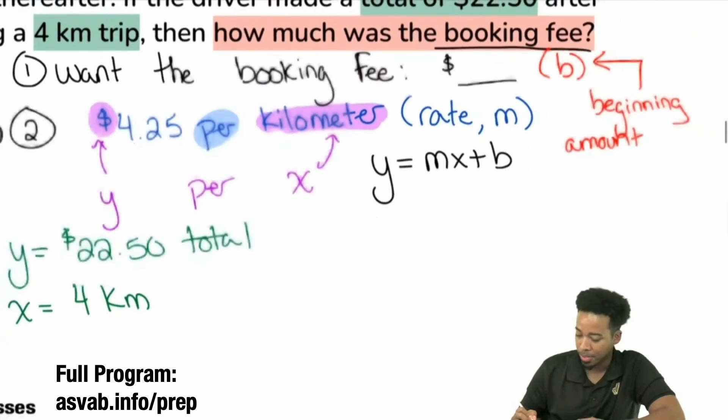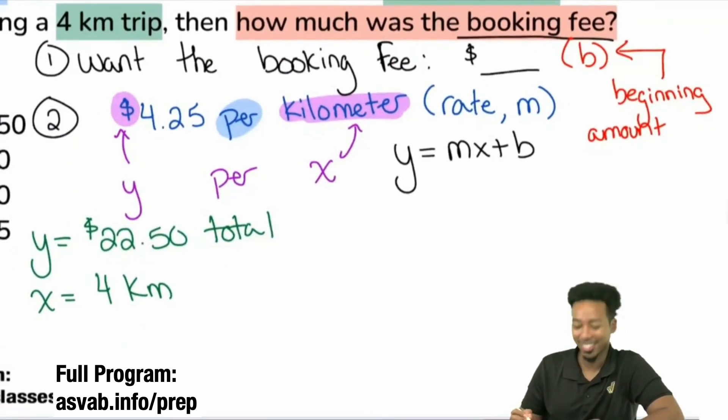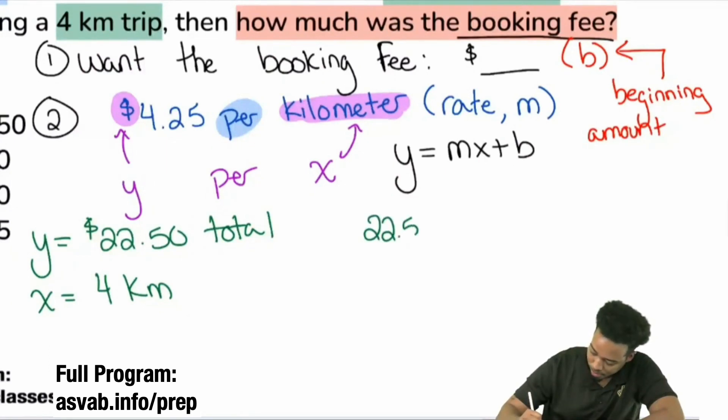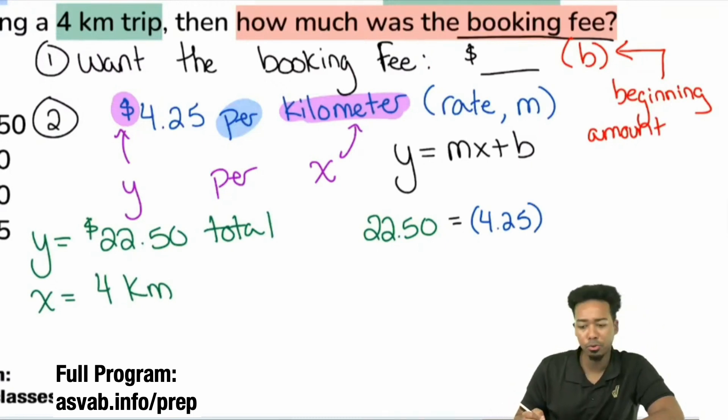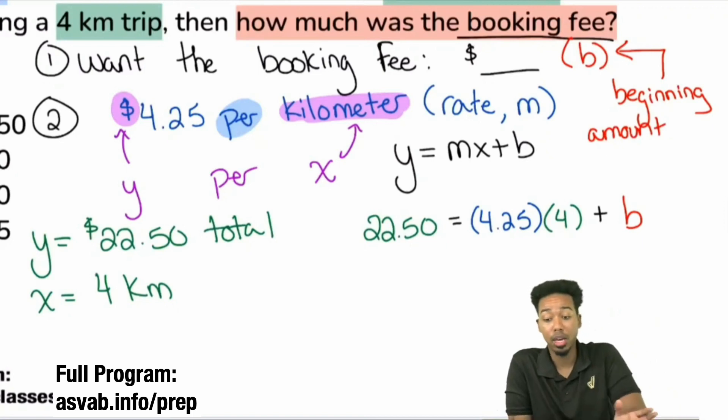So, here we go. Let's get into it here. Let's go ahead and solve. Everybody, what was my Y again? Let's plug it in here. What's my Y again? That's right. My Y is going to be 22.50. Okay. Everybody, what is my M again? 4.25. That's correct. All right, everybody. What was my X? How many kilometers are driven? Right. It's going to be four. And then we're looking for B. So, we're just going to leave that right there. Plus B. I'll keep that in red.